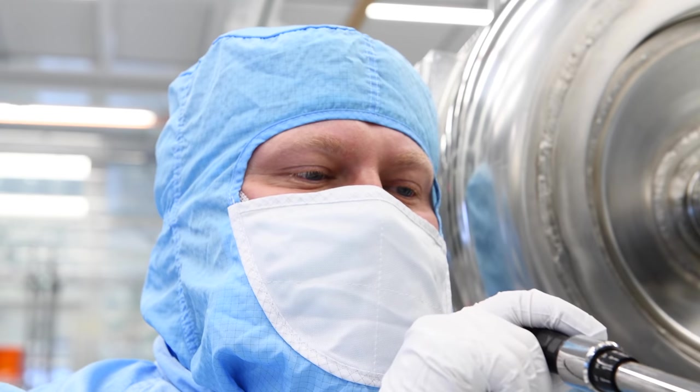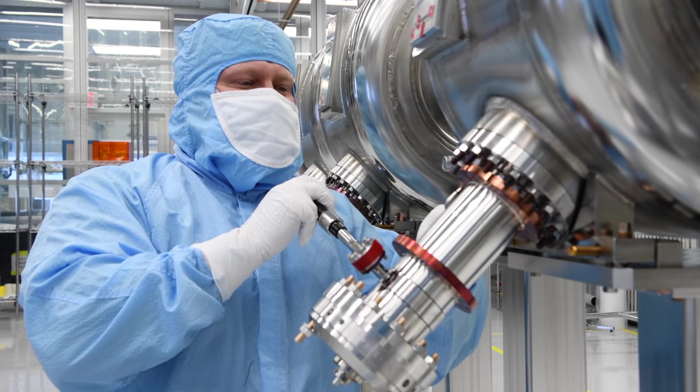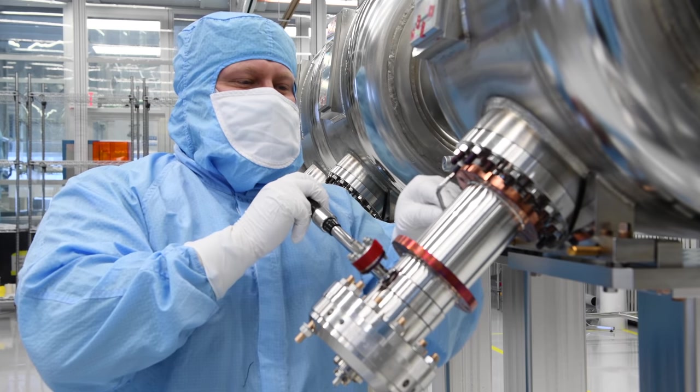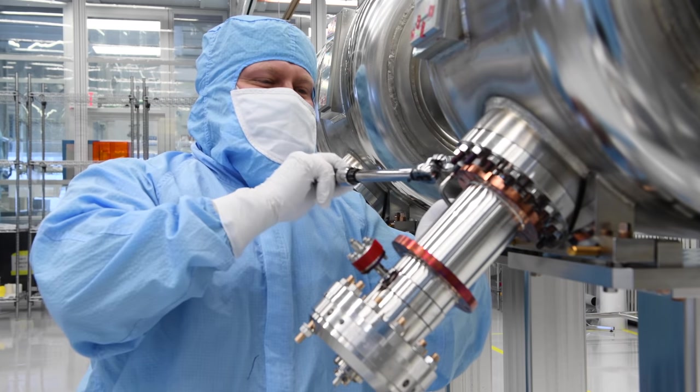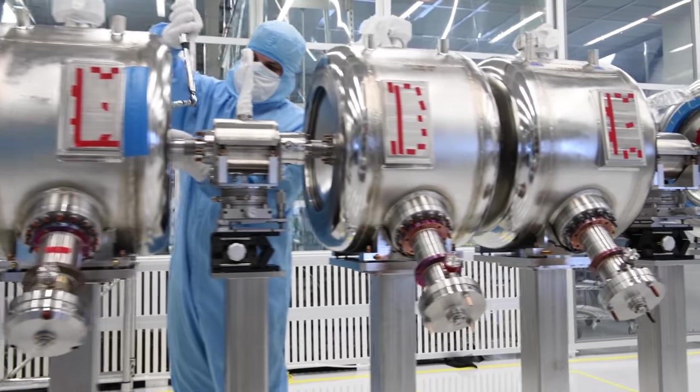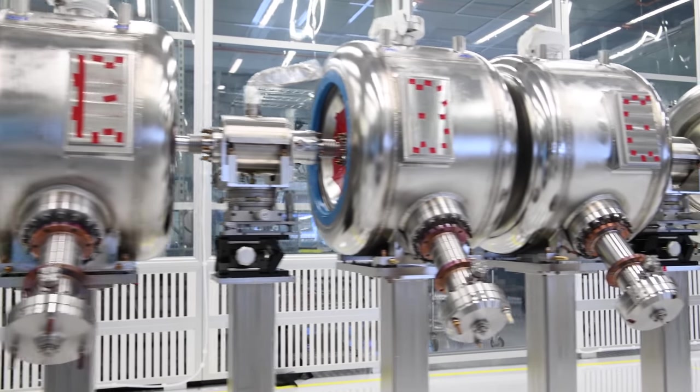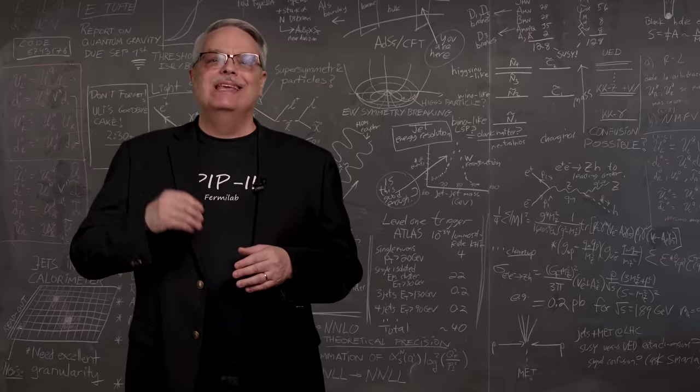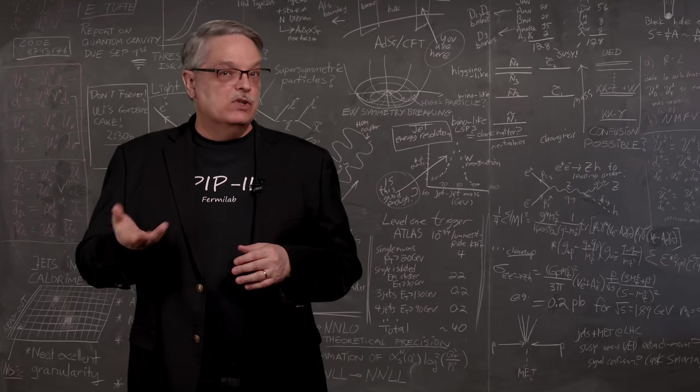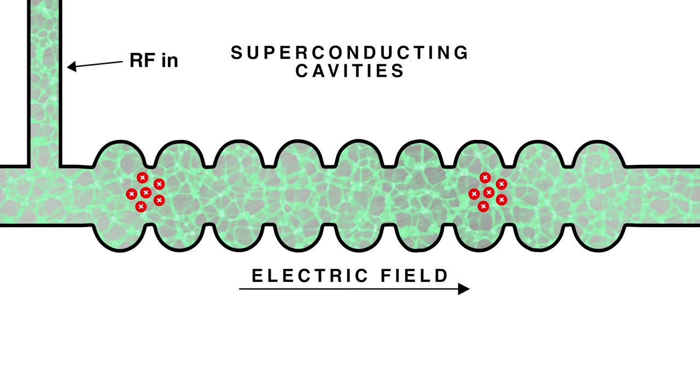In PIP2, scientists make cavities out of superconductors. Superconductors are metals that have no resistance and thus don't heat up when immersed in radio waves. So essentially, all of the radio waves shot into the cavities can go into accelerating the particles. This also means that you don't have to turn the radio waves on and off. You could leave them on all the time and constantly send beam through.